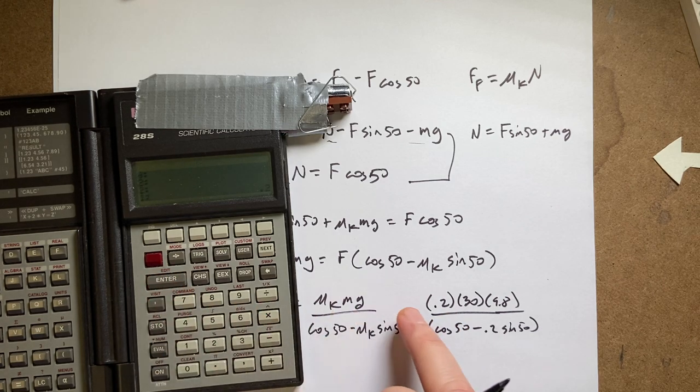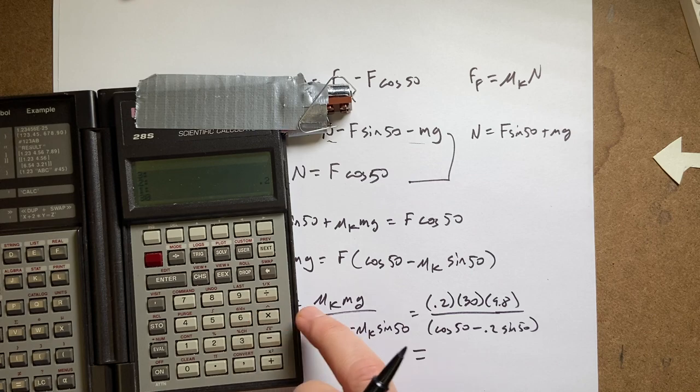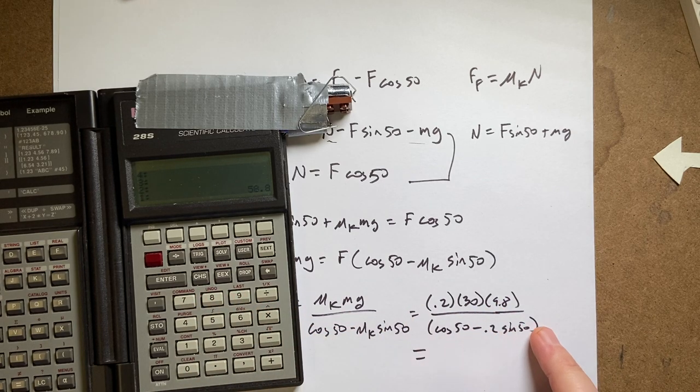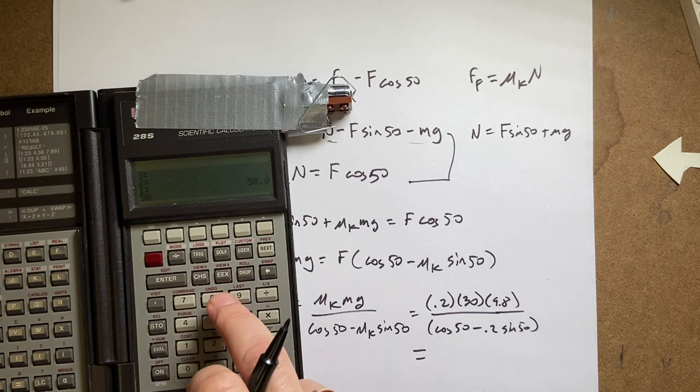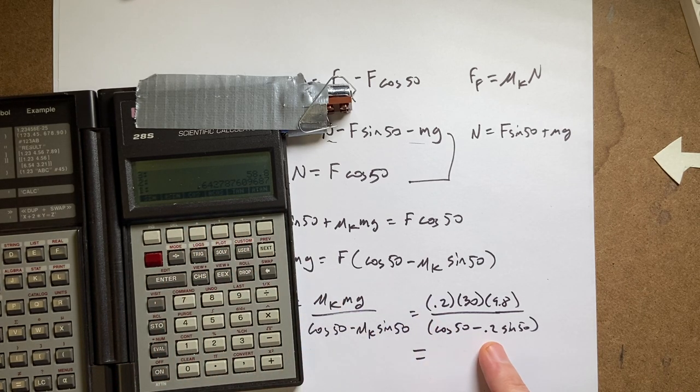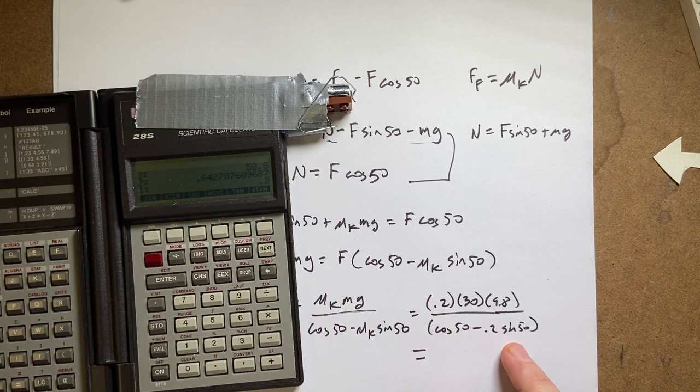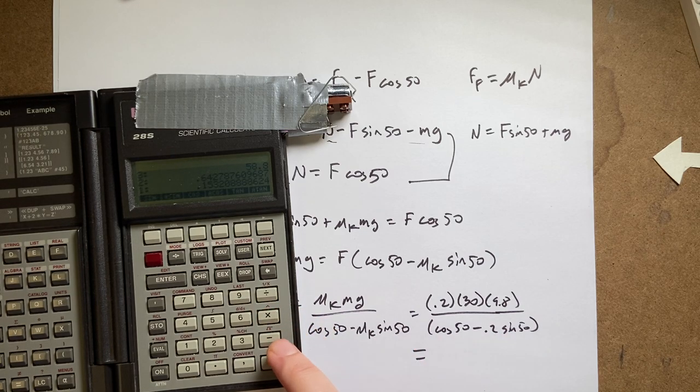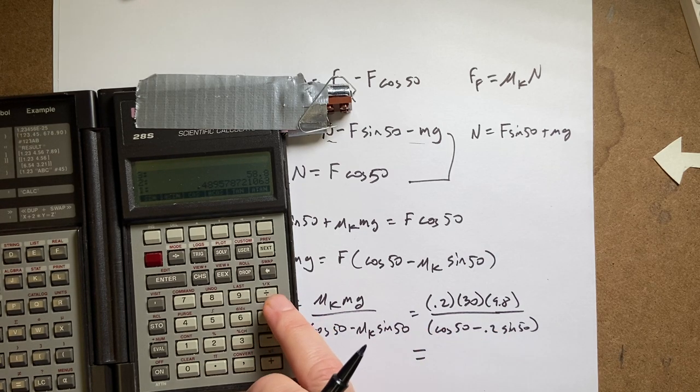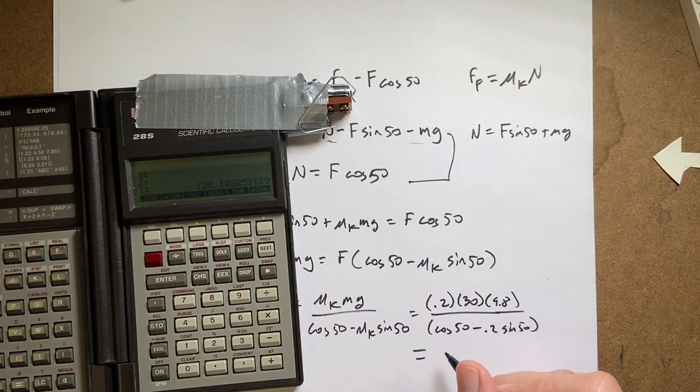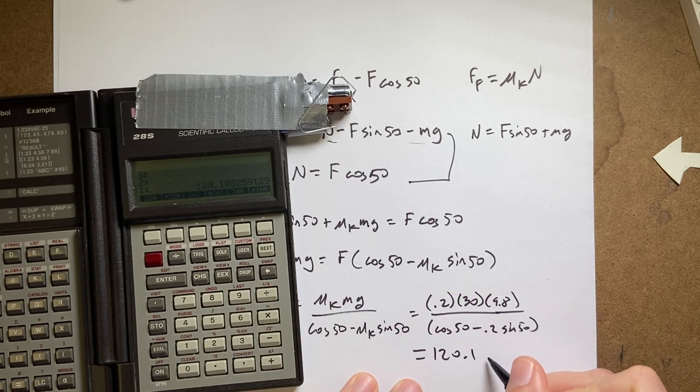Okay, so 0.2, 30 times, 9.8 times. And now I need to calculate this thing. So I'm going to say 50 cosine. And now I need to do this. 0.2, enter, sine of 50, 50 sine times. And then I'm going to subtract those. And then I'm going to divide this, this whole stuff by that. So divide. And I get 120.1 newtons.